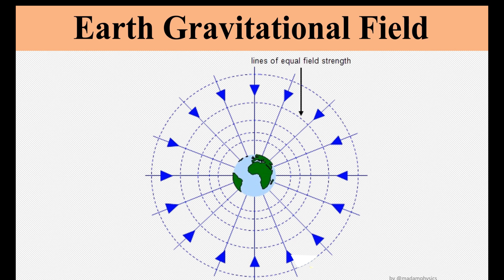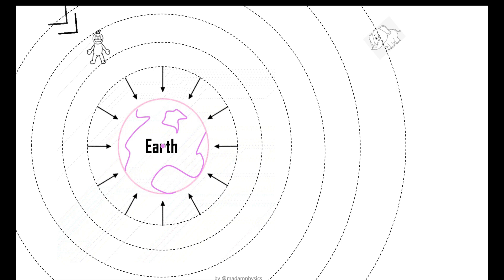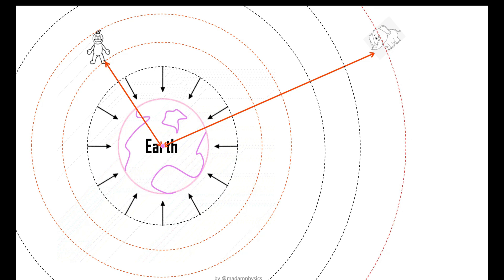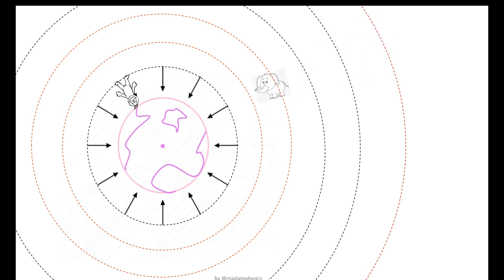We all know that the Earth has a gravitational field around it. Any object located around the Earth will experience different strength of gravitational field depending on its position from the Earth. For example, if a man and an elephant are located at different positions, with the elephant further from the Earth, the gravitational field strength experienced by the man is greater. However, both will be attracted towards the Earth due to the attractive gravitational force.